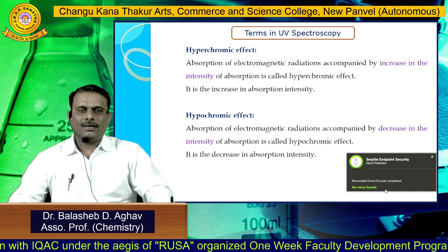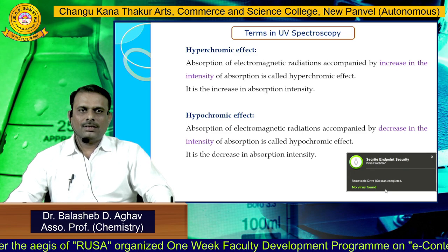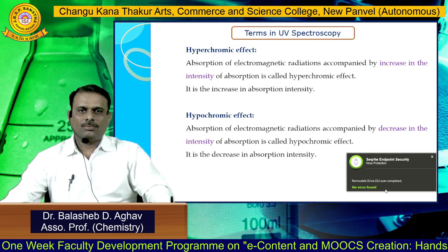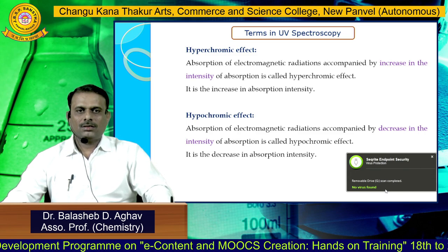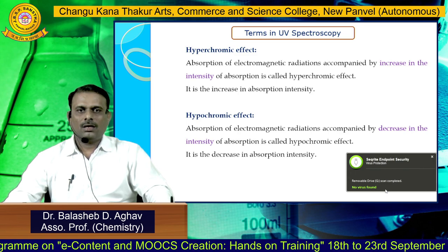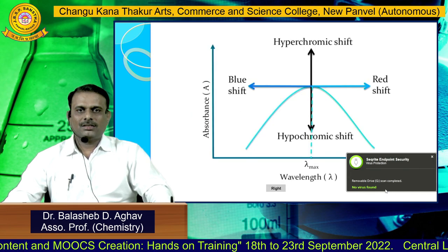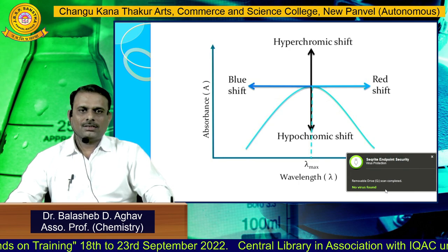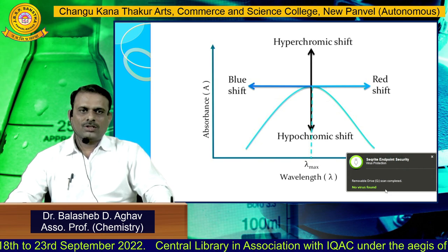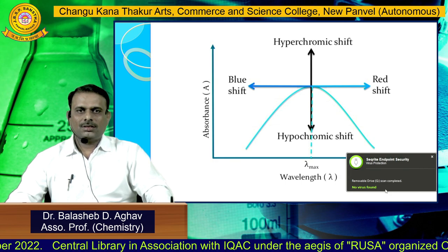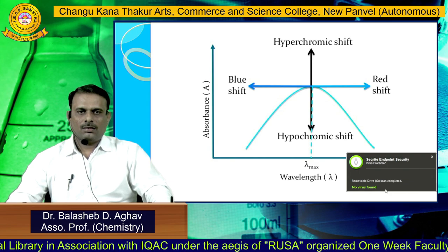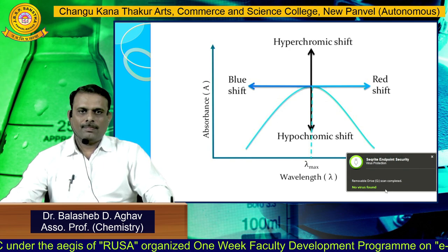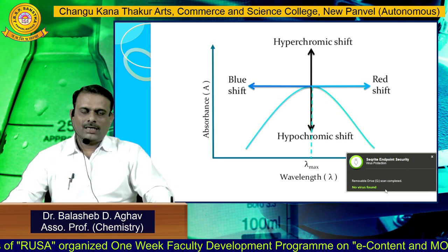Hyperchromic and hypochromic shifts are related to the intensity of absorption. An increase in intensity of absorption is called the hyperchromic effect, while a decrease in intensity is called the hypochromic effect. These four terms — bathochromic (red shift), hypsochromic (blue shift), hyperchromic, and hypochromic — can all be shown schematically in one diagram plotting absorption intensity against wavelength. Today we will stop here and continue in the next video. Thank you.